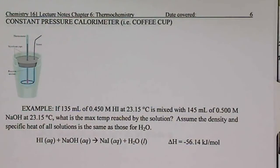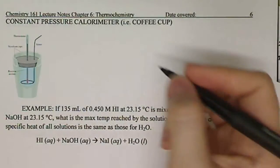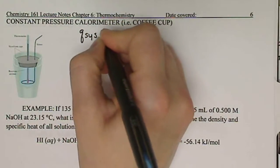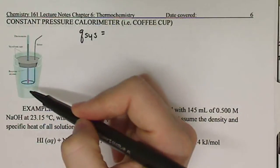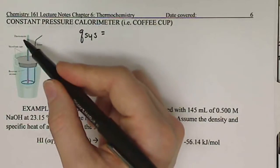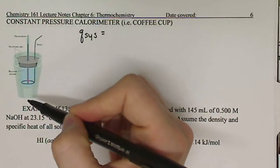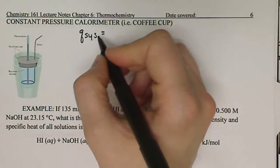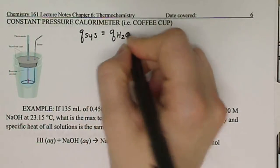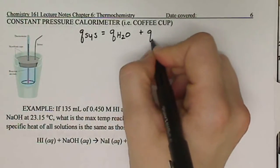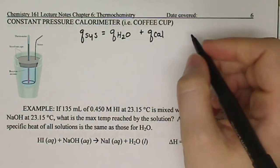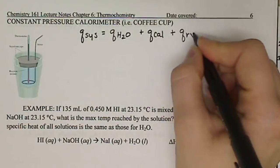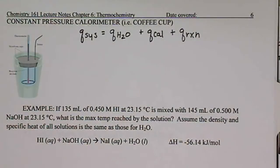Looking at the equations for calorimetry, we're looking at the transfer of heat and trying to measure that from our reaction. The Q of our entire system — which includes our two styrofoam cups, a lid, a thermometer to measure temperature, and some sort of stirring contraption — is going to be equal to the heat from the water in our solution, the heat from our calorimeter components, and the Q of our reaction.